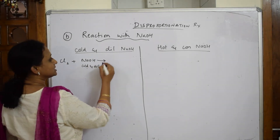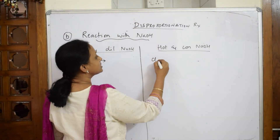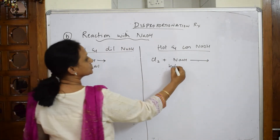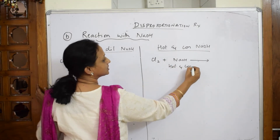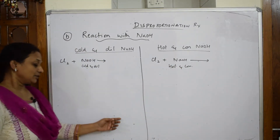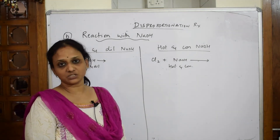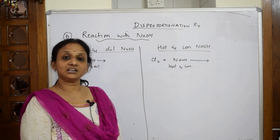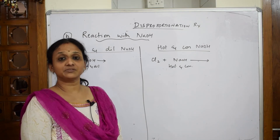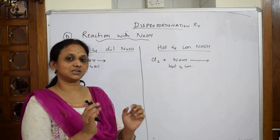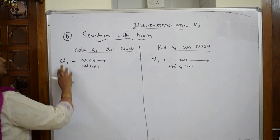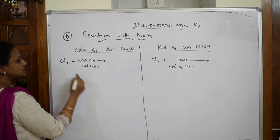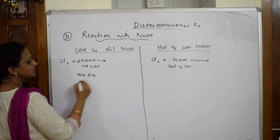The two conditions are: cold and dilute, versus hot and concentrated. When writing such reactions, remember three important steps: first, write the products; second, show the oxidation states — identifying reduction and oxidation; third, balance the reaction; and finally, summarize what is formed. For the cold and dilute condition, take two moles of Cl₂ reacting with two moles of NaOH.